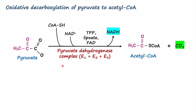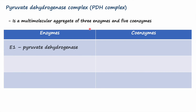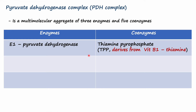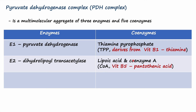Pyruvate dehydrogenase complex is a multi-molecular aggregate of three enzymes and five coenzymes. Enzyme E1 is called pyruvate dehydrogenase and is bound to coenzyme thiamine pyrophosphate, abbreviated as TPP. TPP derives from vitamin B1, thiamine. Enzyme E2 is known as dihydrolipoyl transacetylase and is covalently bound to lipoic acid and coenzyme A.